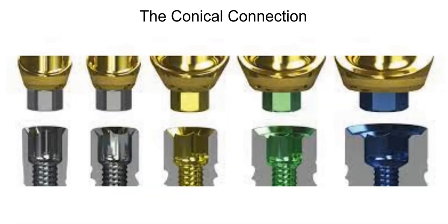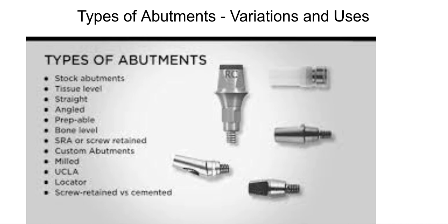Surgeons aren't necessarily looking at prosthetics — they're just hoping to place the implant and let it osseointegrate, and then it becomes your problem. There are lots of different abutments: stock abutments, tissue level, straight, angled, all the way down. This stuff gets confusing. If you've ever opened up an implant manufacturer's prosthetic catalog, it's mind-bending. They change them often based on updates and biomechanics being studied at the institutional level. When they change, there are new terms and you have to keep up with it. Implants are becoming more and more popular, so as general dentists we need to know this stuff.